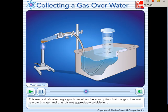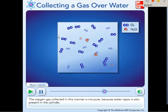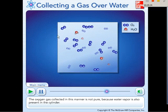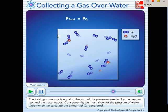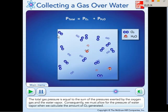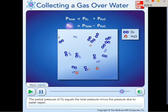This method of collecting gas is based on the assumptions that the gas does not react with water and that it is not appreciably soluble in it. The oxygen gas collected in this manner is not pure because water vapor is also present in the cylinder. The total gas pressure is equal to the sum of the pressures exerted by the oxygen gas and the water vapor. Consequently, we must allow for the pressure of water vapor when we calculate the amount of O2 generated. The partial pressure of O2 equals the total pressure minus the pressure due to water vapor.